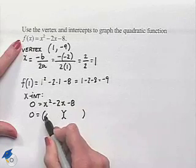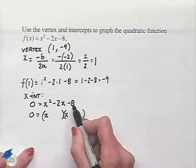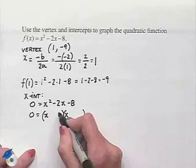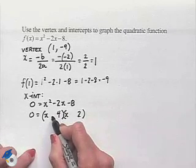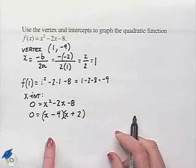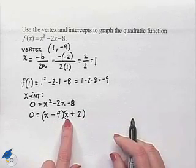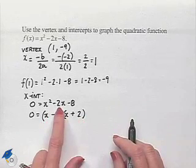Our x squared can be factored as x times x. We'll be looking for factors of 8 that subtract to give us 2, and we can use 4 and 2. If we make this -4x and +2x, then our inner term is -4x and our outer term is +2x, combining to give us the -2x in the middle.